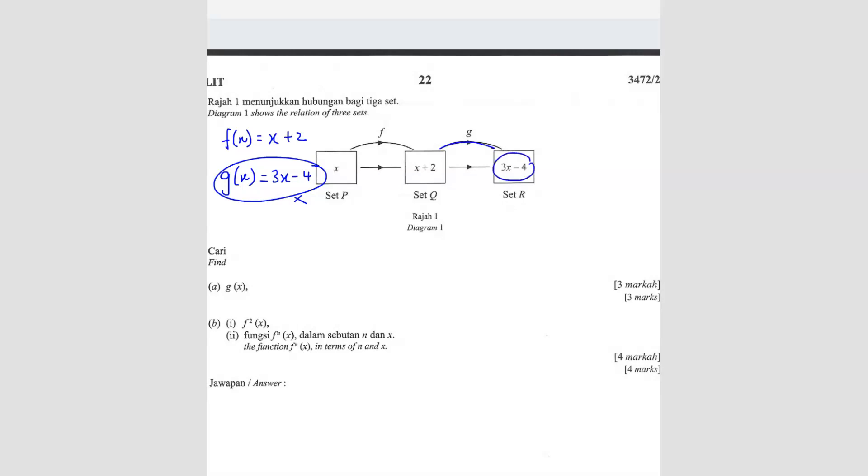3x minus 4 is starting from the beginning here. So that means from x, you have to go through 2 of this function to get 3x minus 4. So 3x minus 4 is not gx.